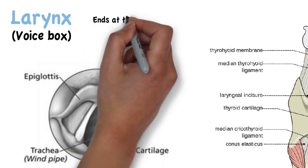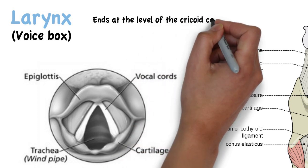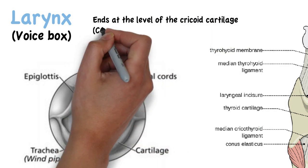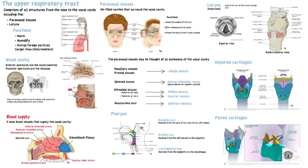The larynx ends at the level of the cricoid cartilage, which is at the sixth cervical vertebra. Below the larynx, the trachea starts, and its structure, together with the whole lower respiratory tract, will be discussed in another video.